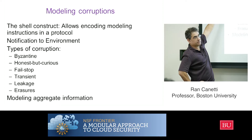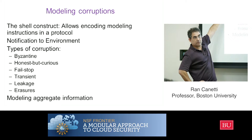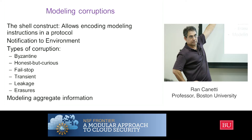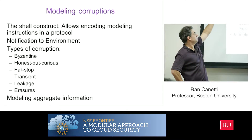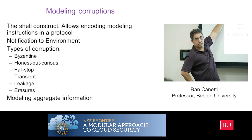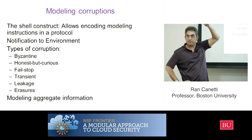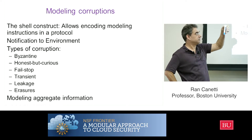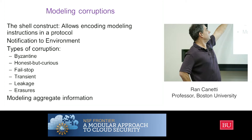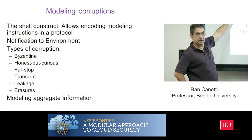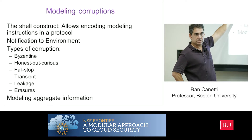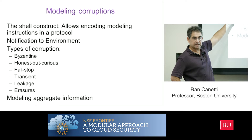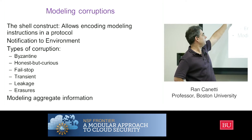We can do different things if you want to model different types of corruptions. If it's a Byzantine corruption, we tell the adversary everything and just follow the adversary's instructions. If it's an honest-but-curious corruption, we tell the adversary everything but continue running the code as instructed. If it's a fail-stop corruption, we just stop whenever the adversary tells us to and we're not going to tell the adversary anything.